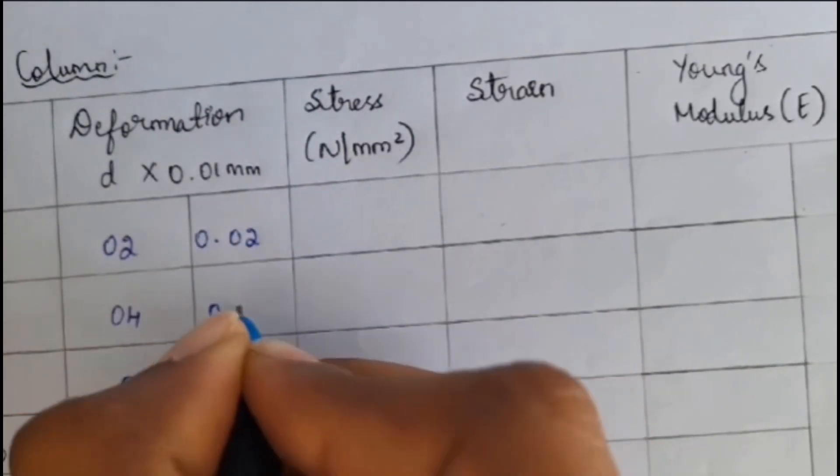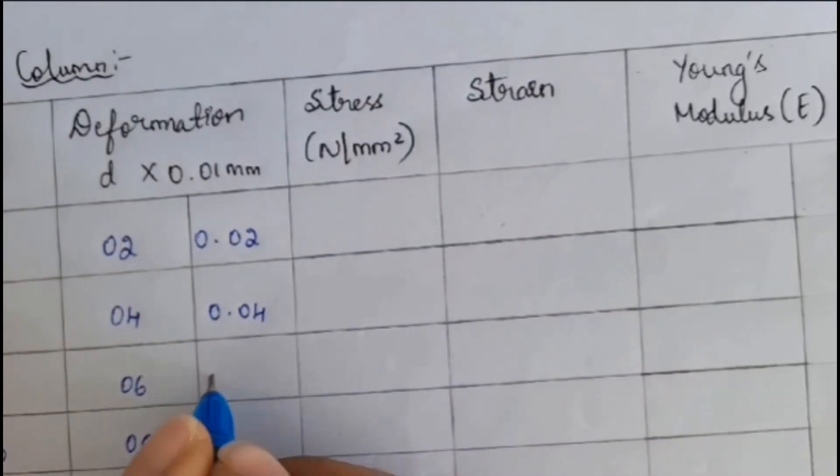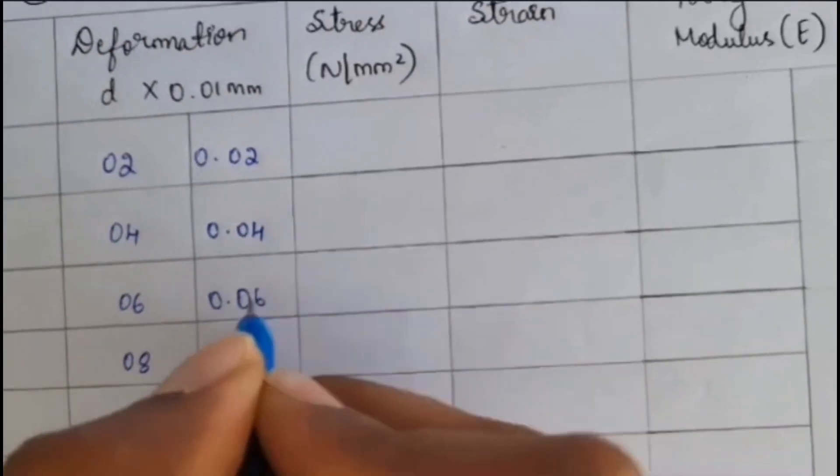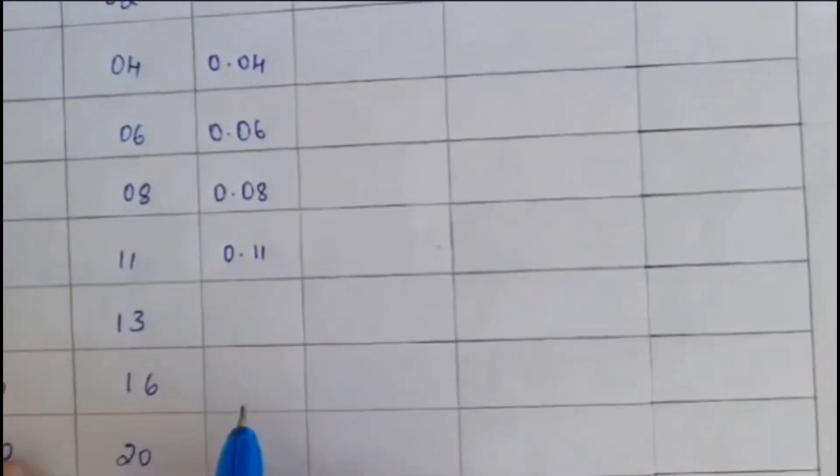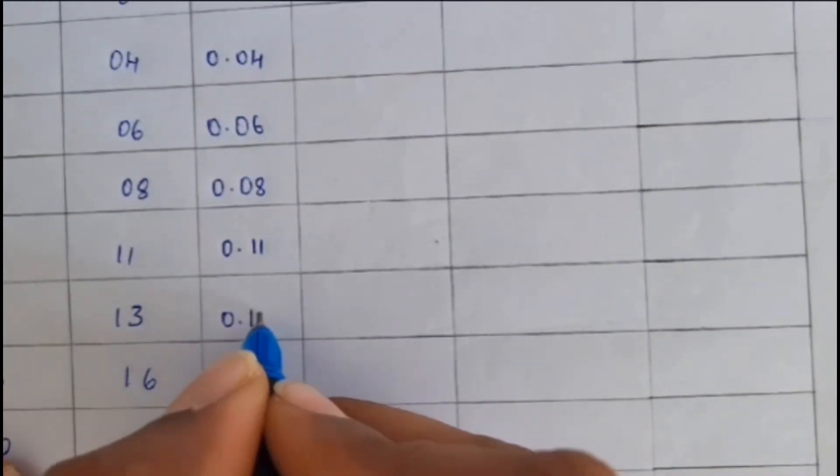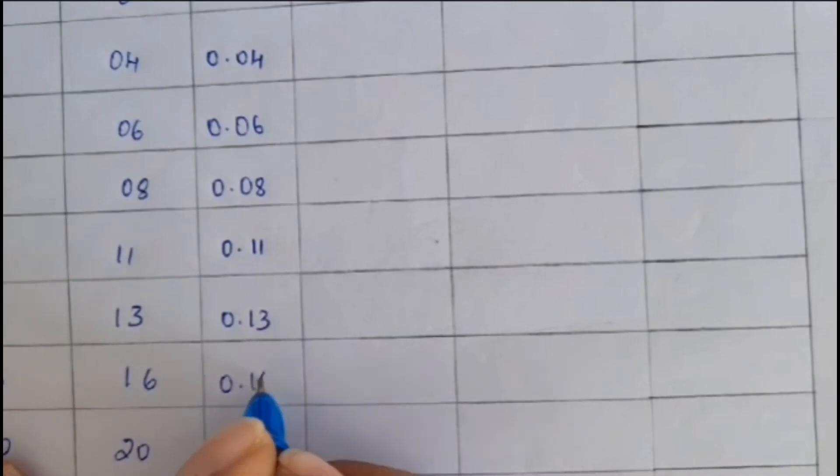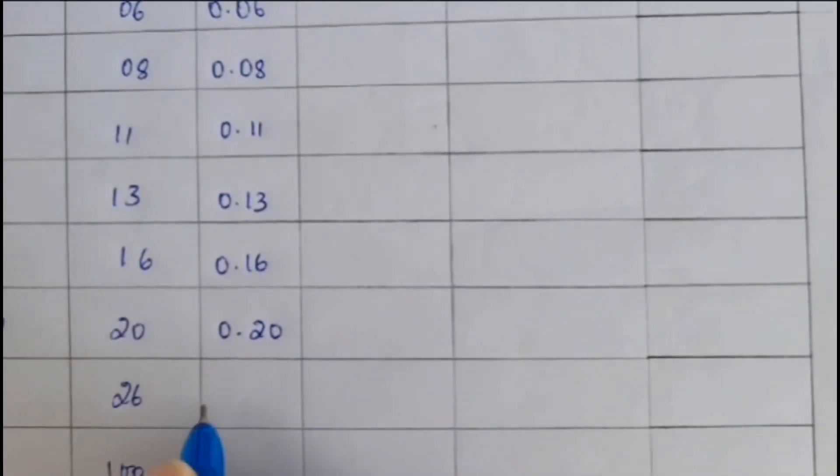So, I will be converting it into mm. That is, multiply with 0.01. So, in mm, I will be getting as 0.02, 0.04, 0.06, 0.08, 0.11, 0.13, 0.16, 0.20, 0.26 and 1.